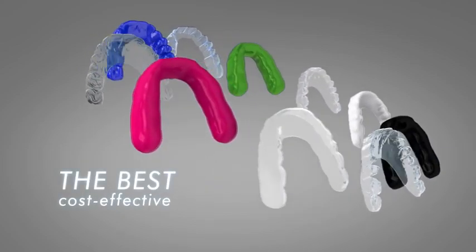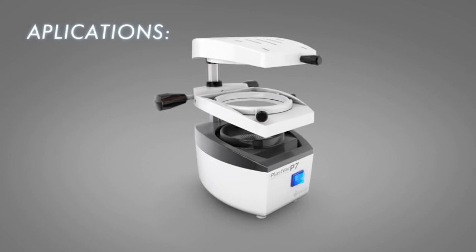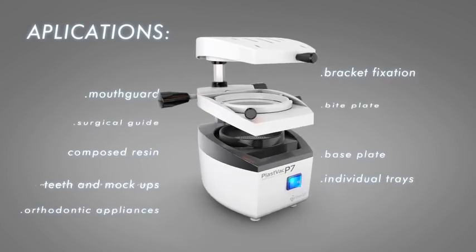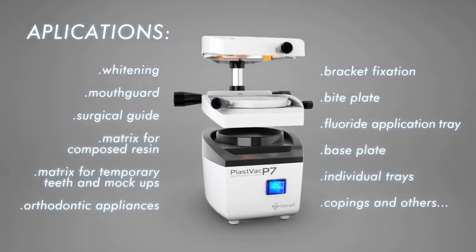With approximately 30 sheets, you recover the investment. The PlastVac P7 will turn your dental office or lab into something much more versatile. It can be used in more than 15 applications.